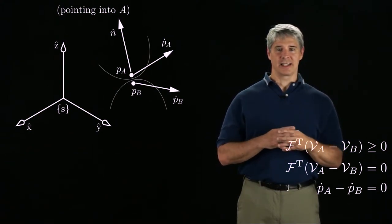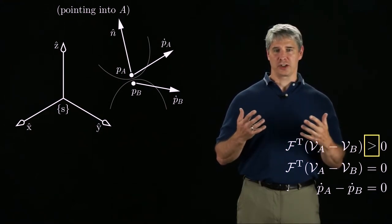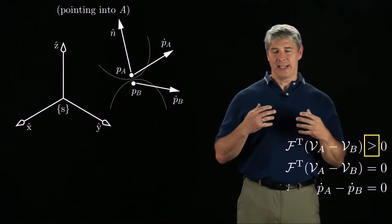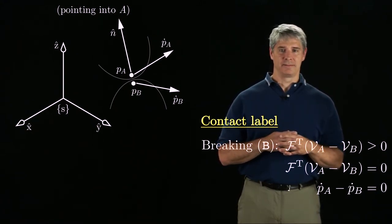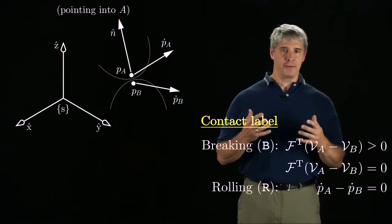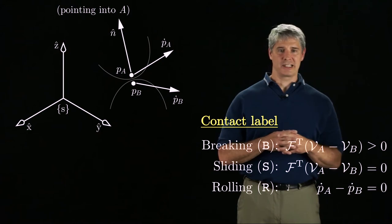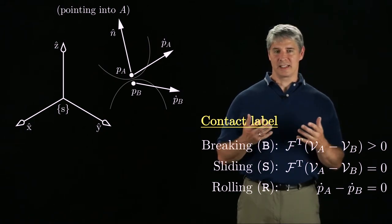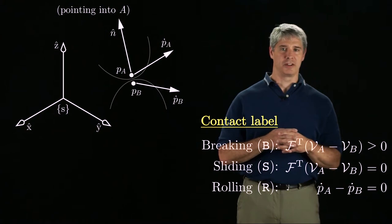To further categorize a contact satisfying the impenetrability constraint, let's change this greater than or equal to sign to a strict greater than sign. Then we define the contact label B signifying a breaking contact, the contact label R for a rolling contact, and the contact label S for a sliding contact that does not satisfy the more restrictive rolling conditions. These conditions tell us, to first order, what happens at the contact if we're given the twists of the two bodies.